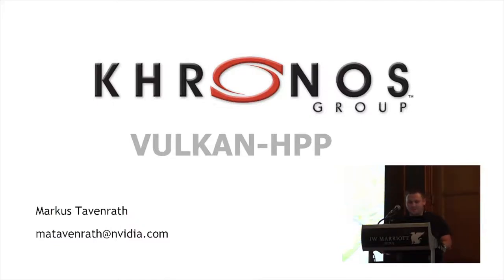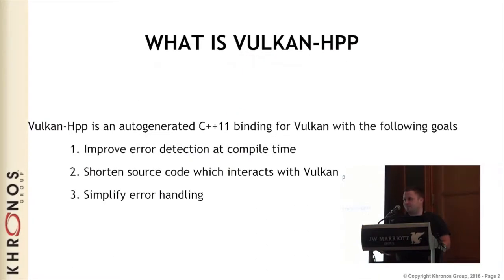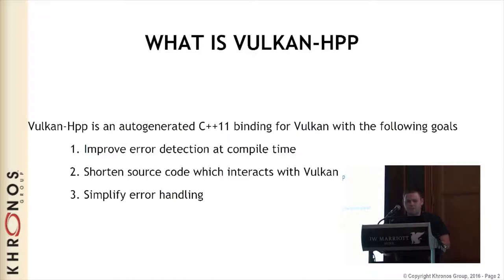We spent some time thinking about whether there is any way to map Vulkan - the Vulkan spec - auto-generated to C++, and make life easier with the following goals. We want to improve error correction at compile time, since modern C++ is a lot about static asserts and type safety. We also want to shorten the source code when working with the Vulkan API - places where we have to write 30 lines of code we can reduce to a single line. And of course we want to simplify error handling.